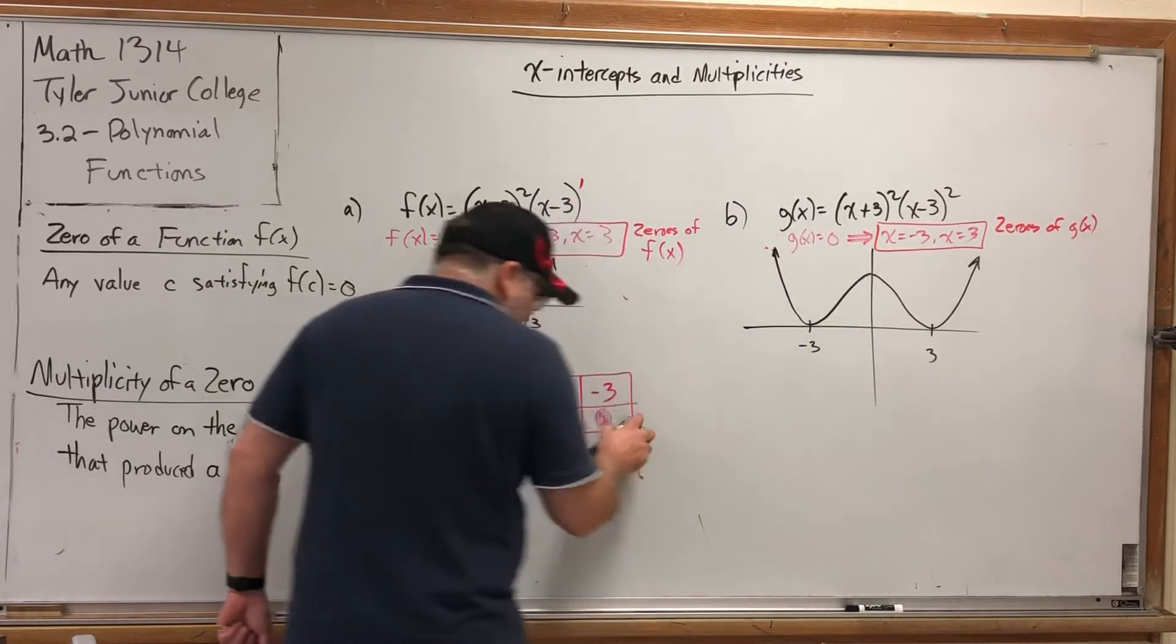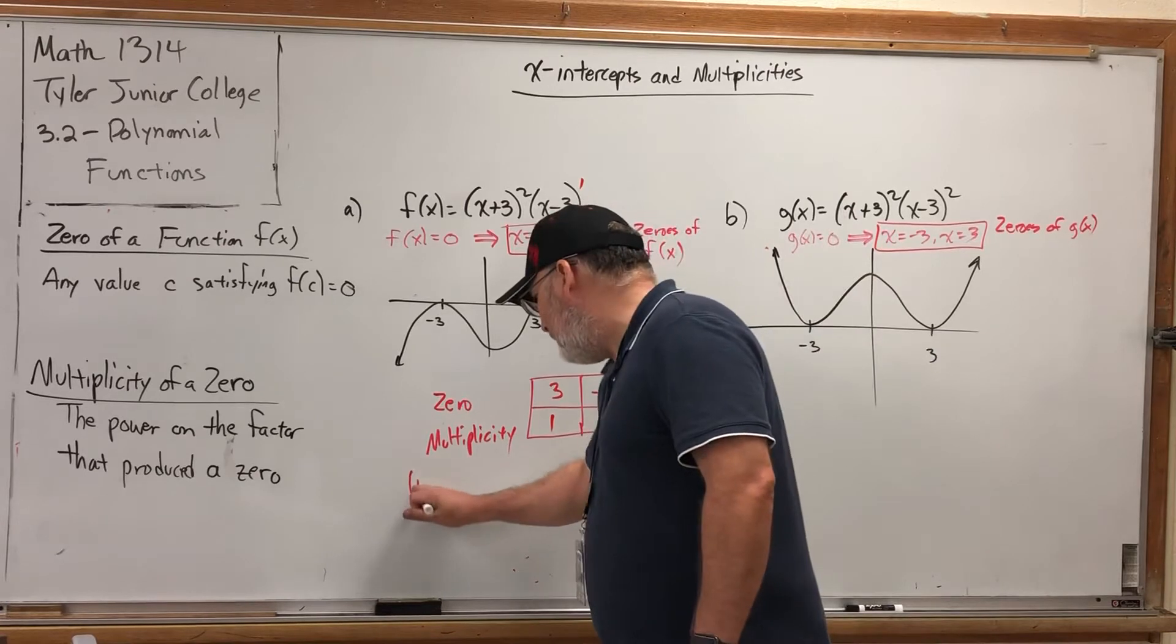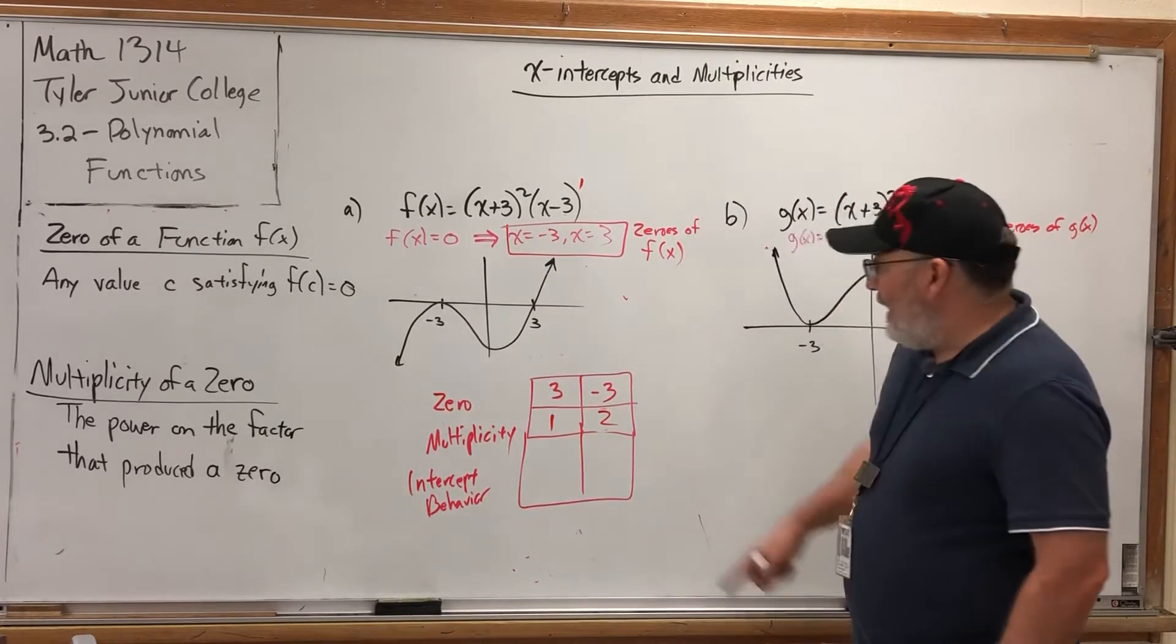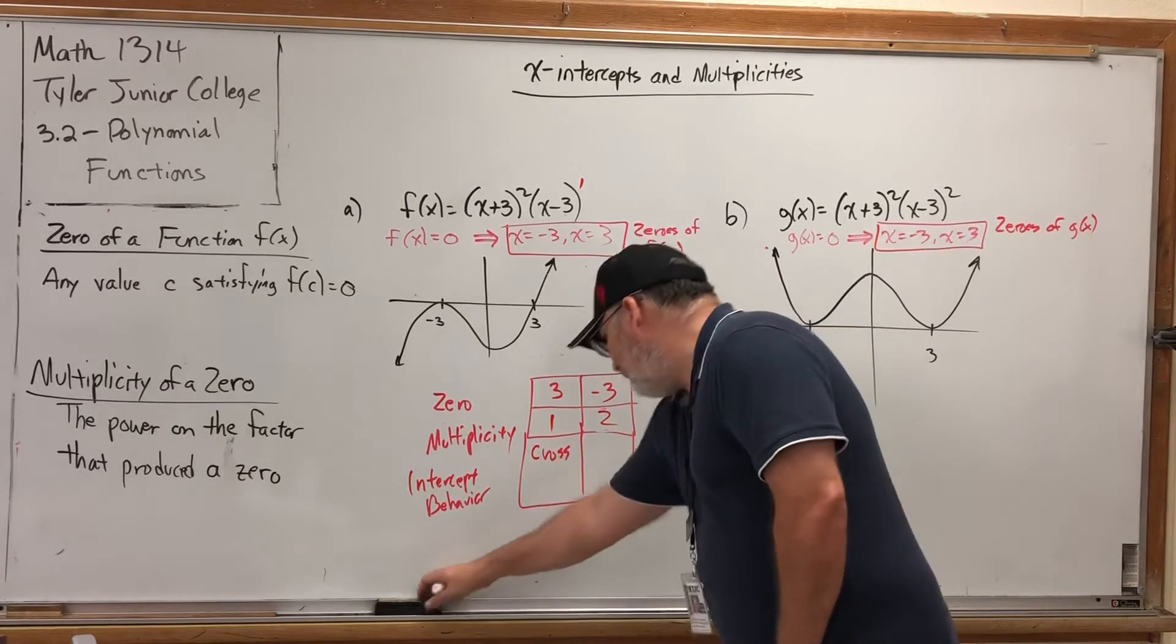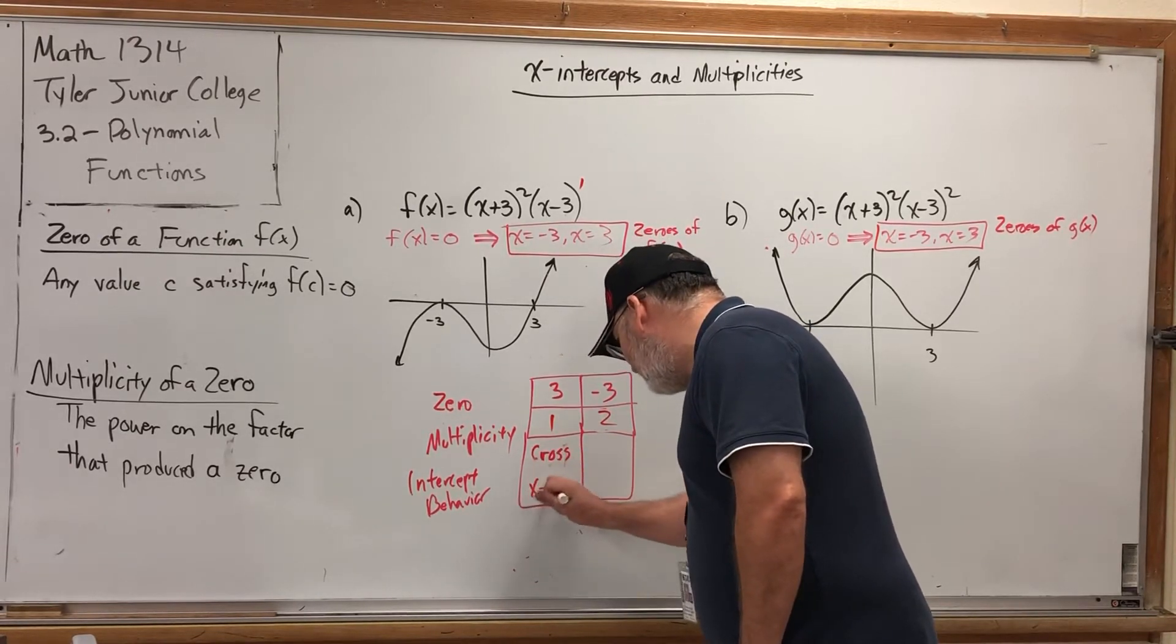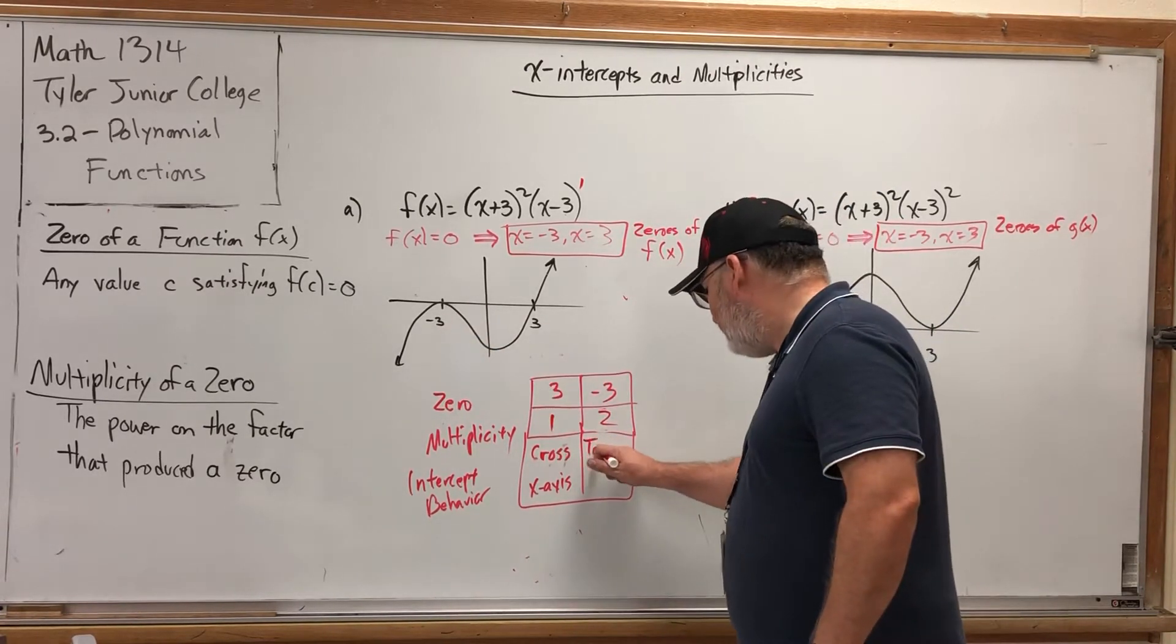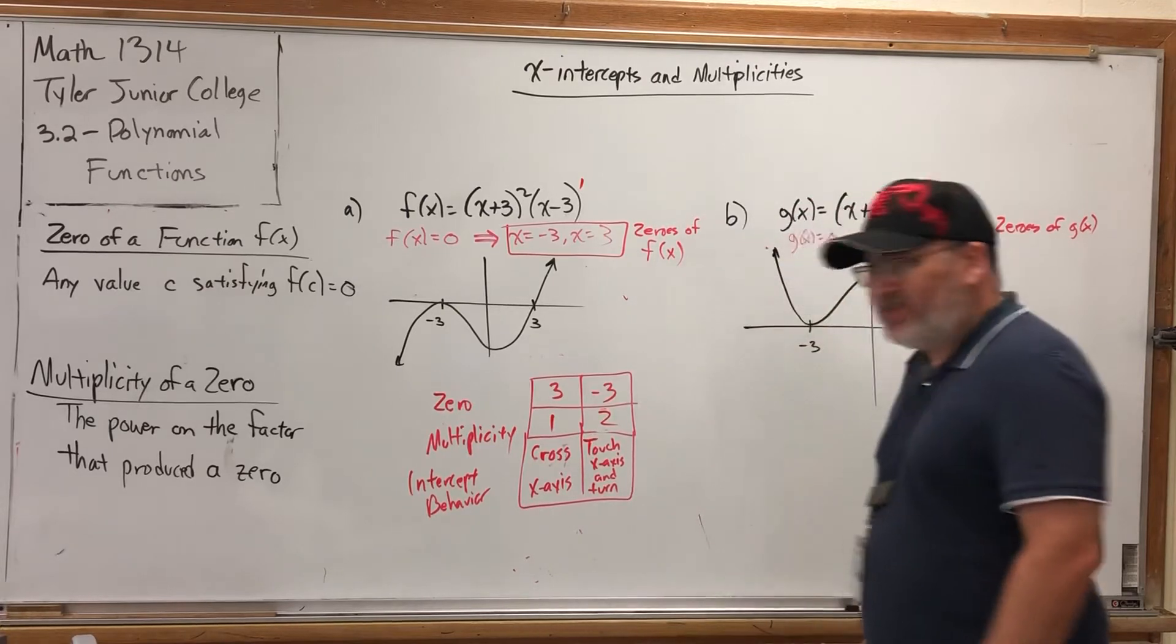The multiplicity of negative three is two. Now, before we move over here, let's describe the intercept behavior. So I'm going to make a third row. It's a little wider because I'm going to write some words. At three, did we cross the x-axis or touch and turn? We crossed. We crossed the x-axis. But what happened at a zero of negative three? We didn't cross. We touched the x-axis and turn. So we touched the x-axis and turn. Or you could say more succinctly, touch and turn.